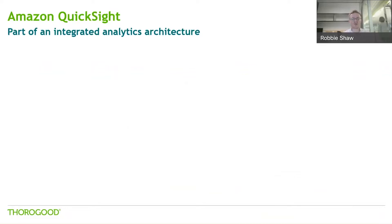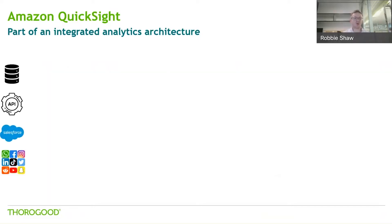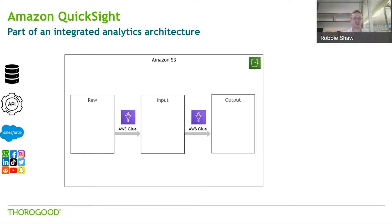How does QuickSight fit into an overall analytics architecture? It fits most seamlessly with AWS. You might have your source data from any number of sources, you set up your data lake using Amazon S3 - that's Amazon's leading file storage. You have your different layers within that: your raw, input, output, or what some people call bronze-silver-gold, where you land data in its rawest form first, then you cleanse, process, and transform it, so that by the time you get to the output layer - the gold layer - data is ready to be used, reported on, and viewed by the business.